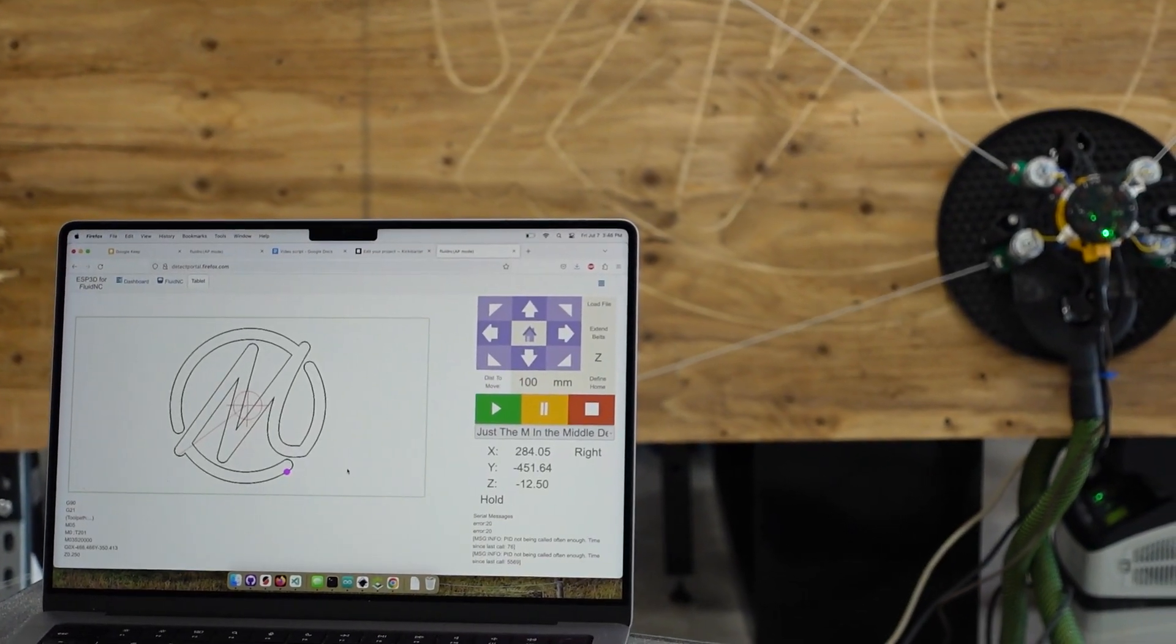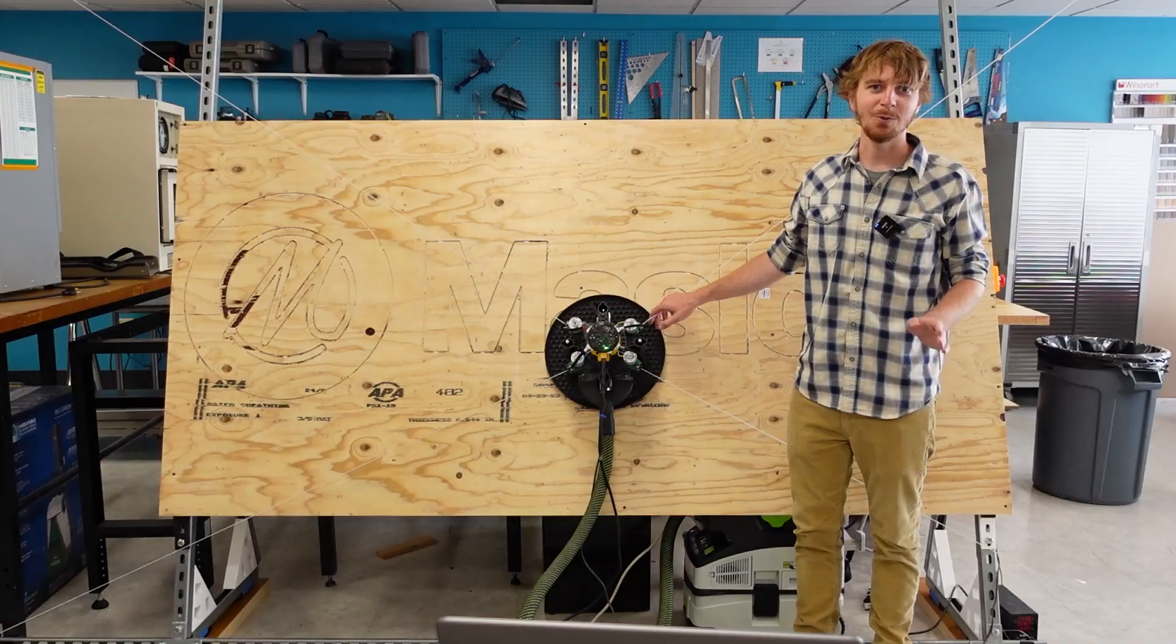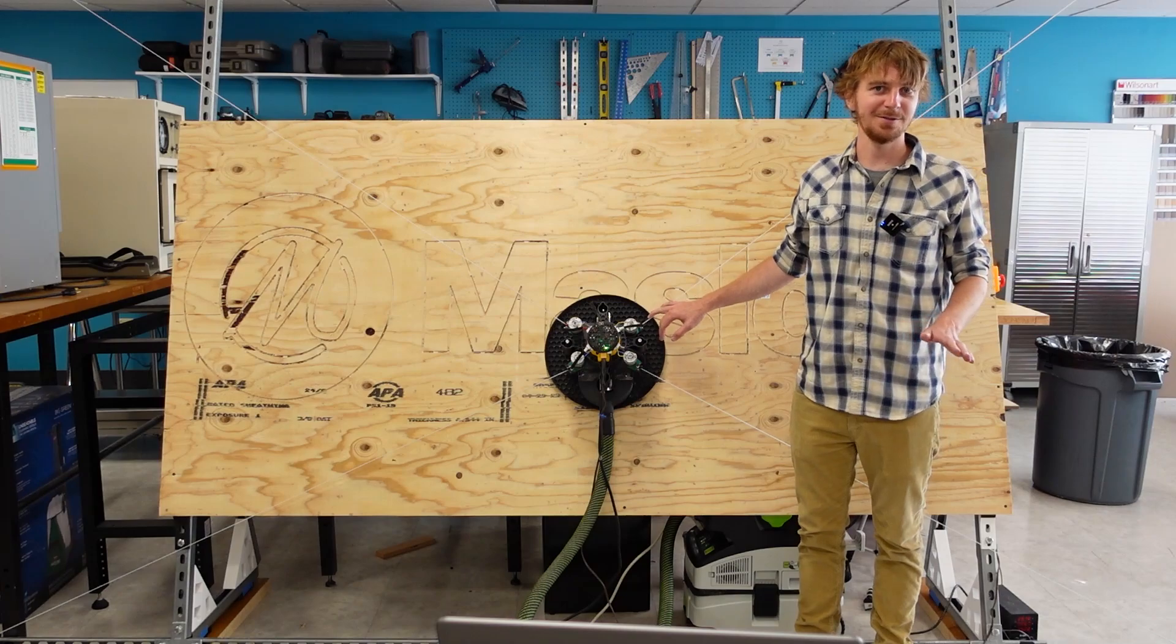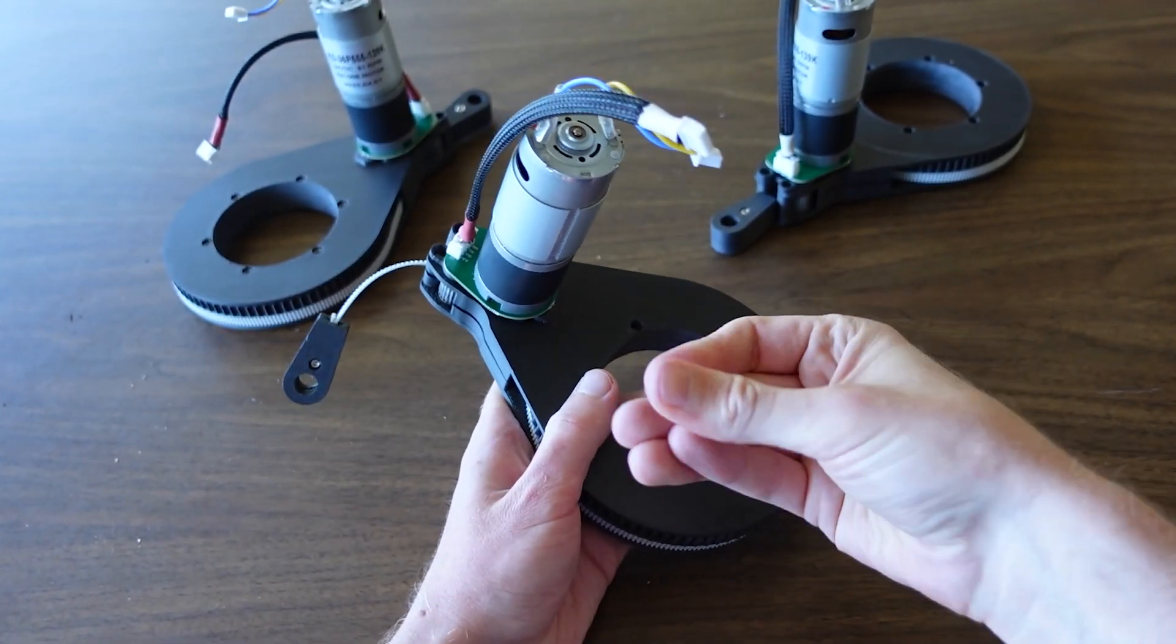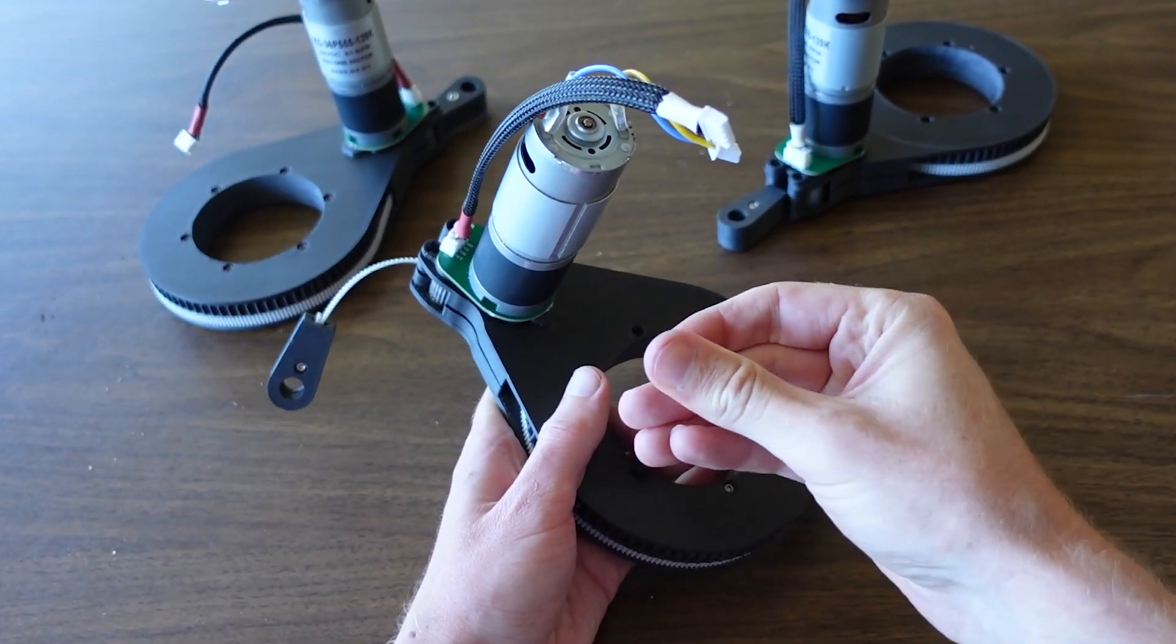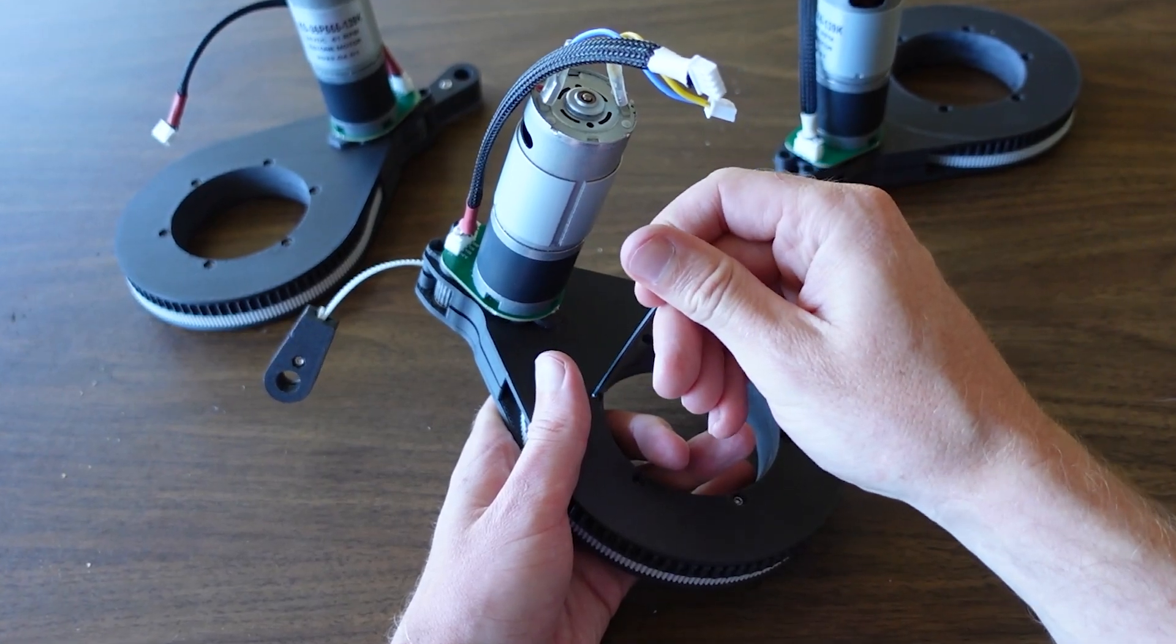You connect to Maslow 4 over Wi-Fi with any modern browser. We're proud to say that there's no Maslow CNC app. Maslow 4 is easy to assemble and requires no special tools, no soldering, and no programming to put together.